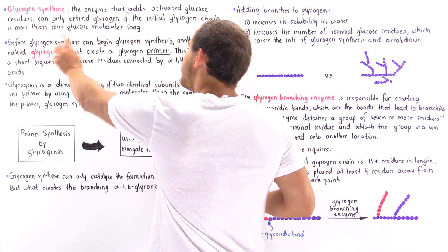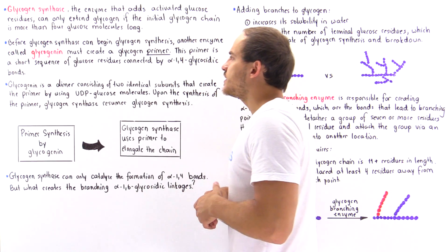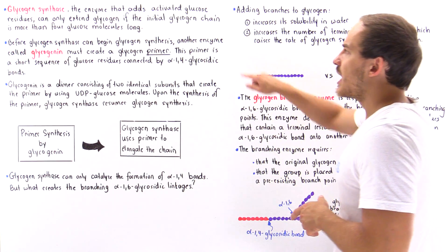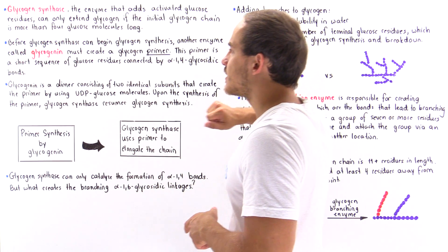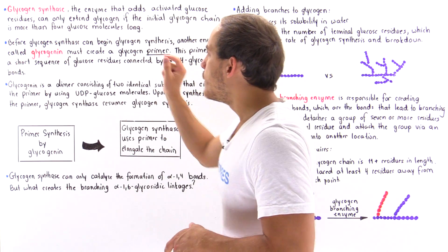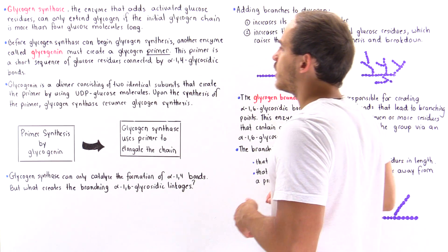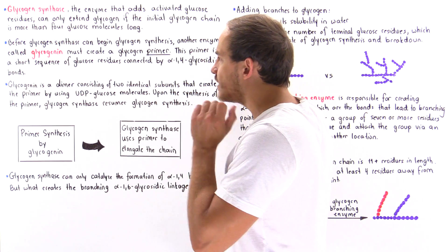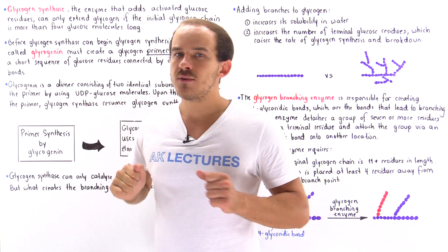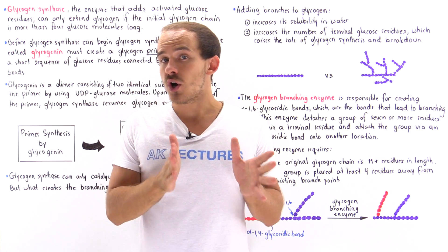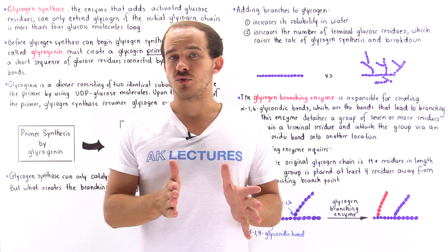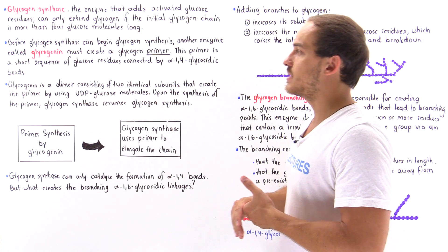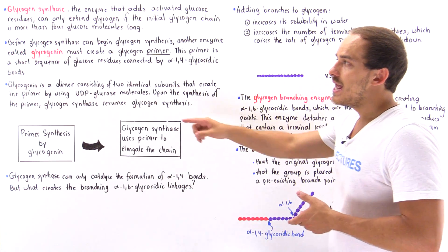Before glycogen synthase can begin glycogen synthesis, another enzyme called glycogenin must create a glycogen primer. This primer is a short sequence of glucose molecules connected by alpha-1,4-glycosidic bonds.